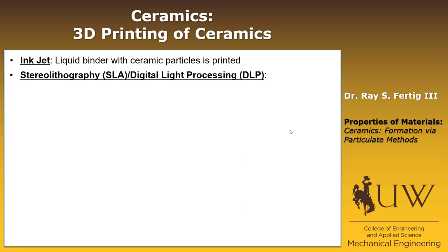Another method is stereolithography — SLA — or digital light processing, DLP, of ceramics. One approach loads the polymer resin with ceramic particles; the polymer acts as a binder, the particles are in close contact, and then you sinter the particles together, burn off the polymer, and you're left with the resulting final ceramic.